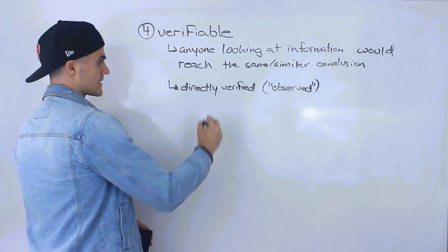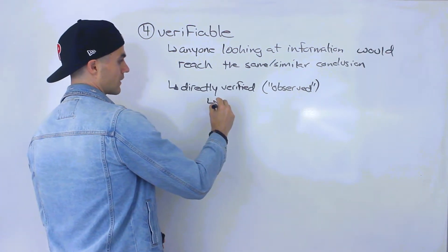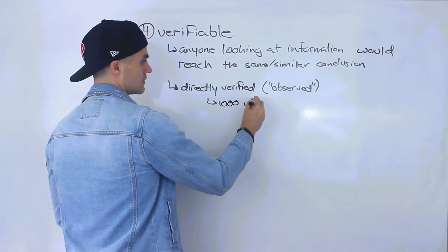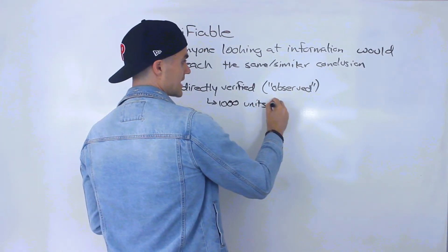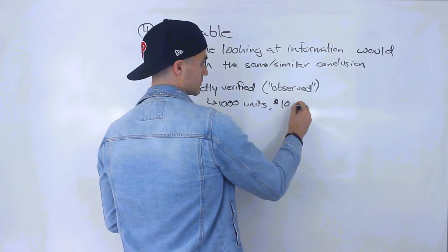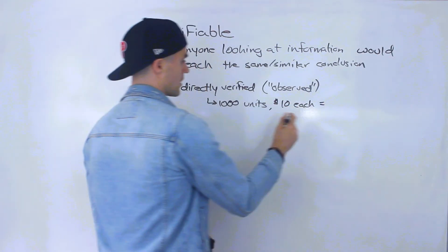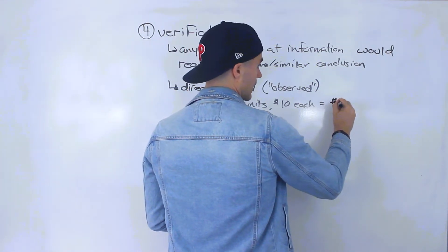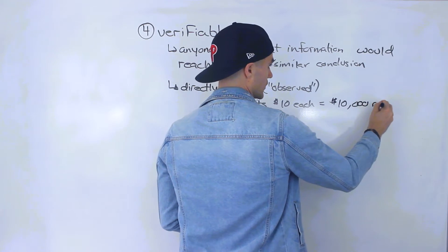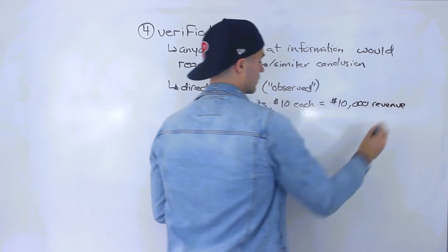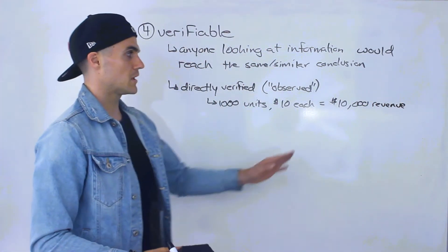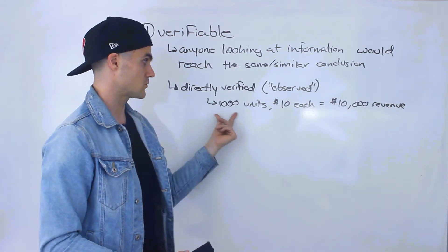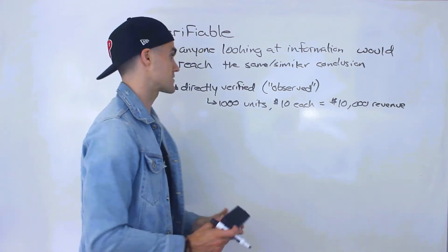Let's do a simple example. Let's say that a company sells 1,000 units of a product at $10 each. That means they made $10,000 worth of revenue. Anyone should be able to come up with this number — it's directly verified: 1,000 times 10 gives us $10,000.